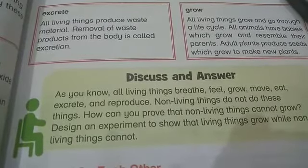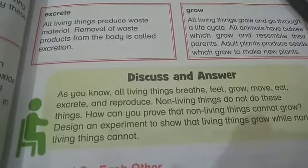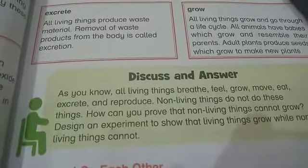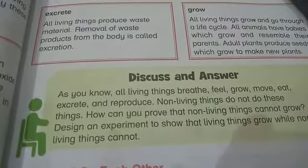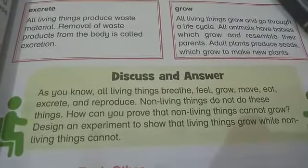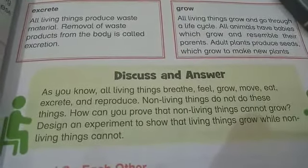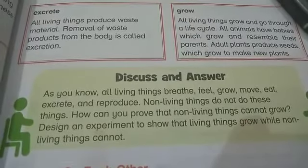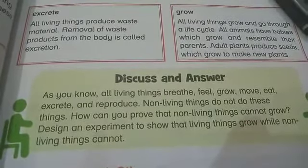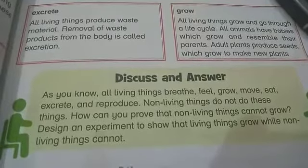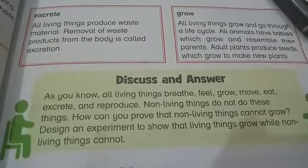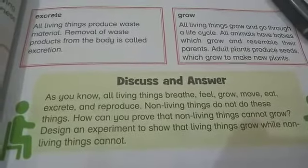Living things produce waste material in their bodies. This waste material should be removed from the body; the process of removal is called excretion. Similarly, living things grow and go through a life cycle. Animals produce babies which grow and then change into adults. Similarly, plants produce seeds which help to make new plants.